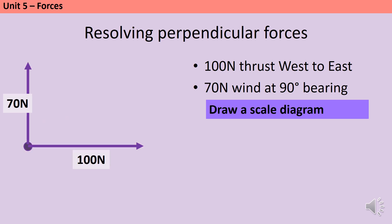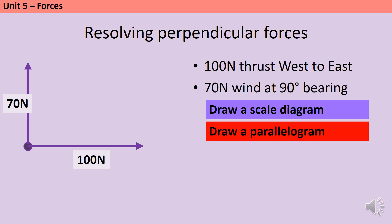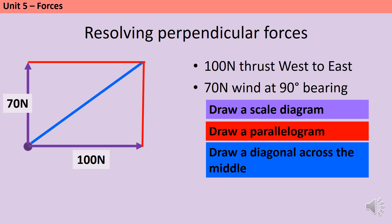We can use the same technique when forces are perpendicular — at 90 degrees to each other. In this example, the boat still has a thrust of 100 newtons west to east, but now the wind is 70 newtons at a 90-degree bearing. I pick a sensible scale, draw a 10 cm horizontal line and a 7 cm vertical line, and turn it into a parallelogram — which in this case is actually a rectangle. I draw the diagonal, measure it, and find it is 12.2 centimetres long, giving a resultant force of 122 newtons.